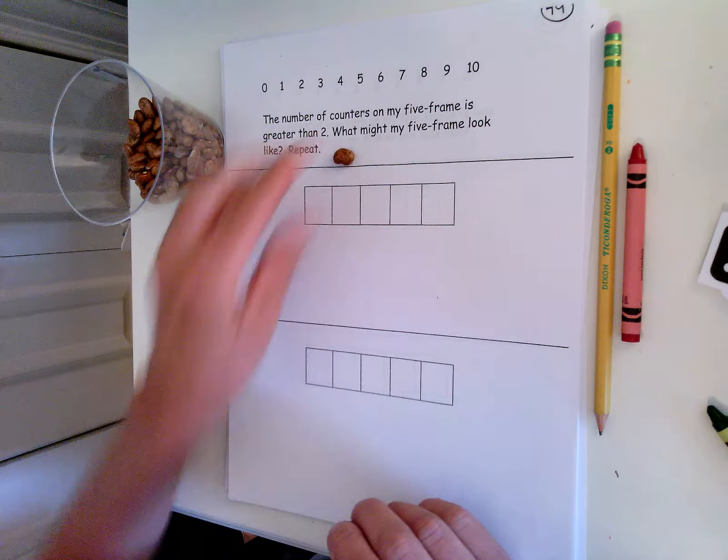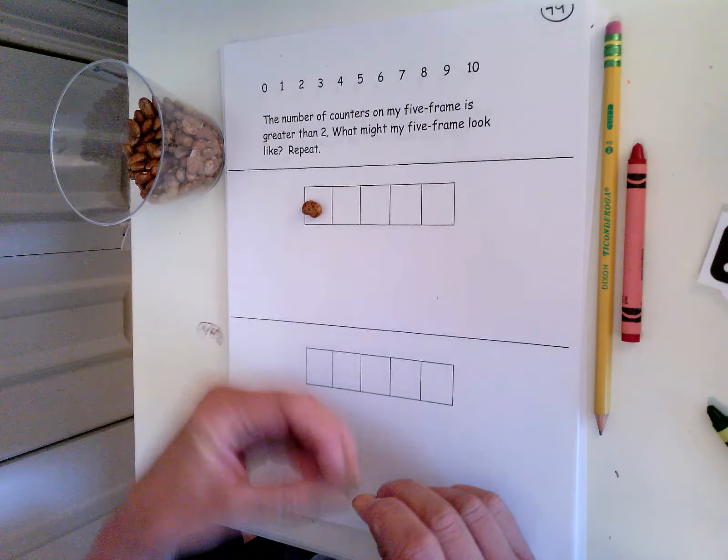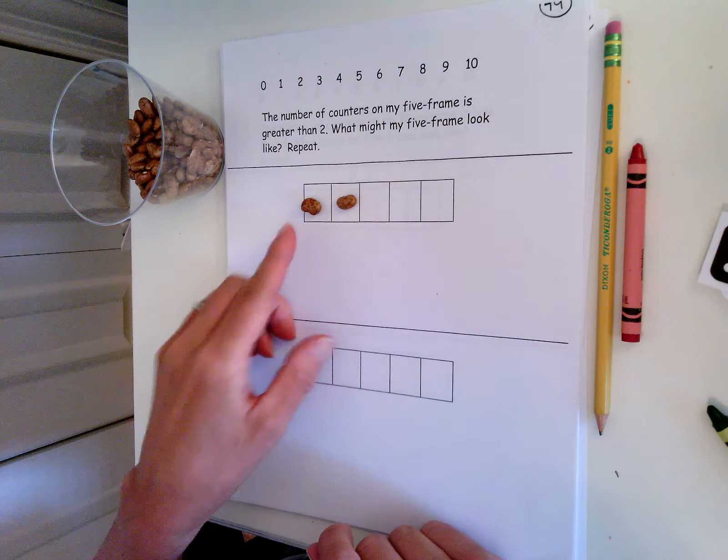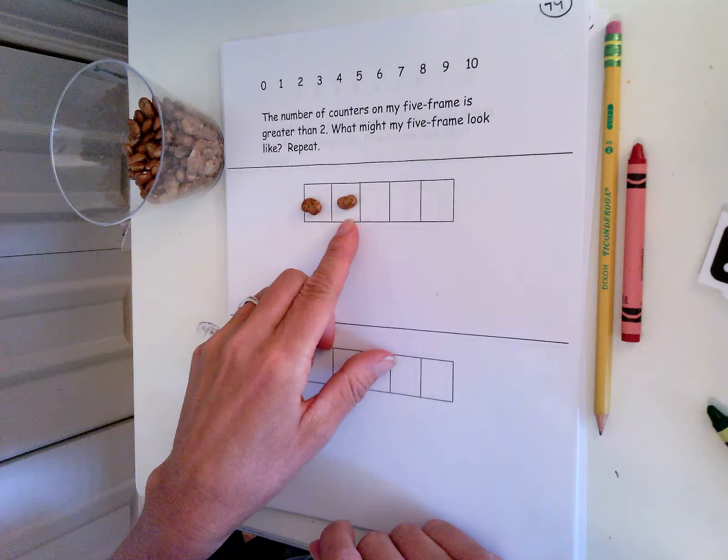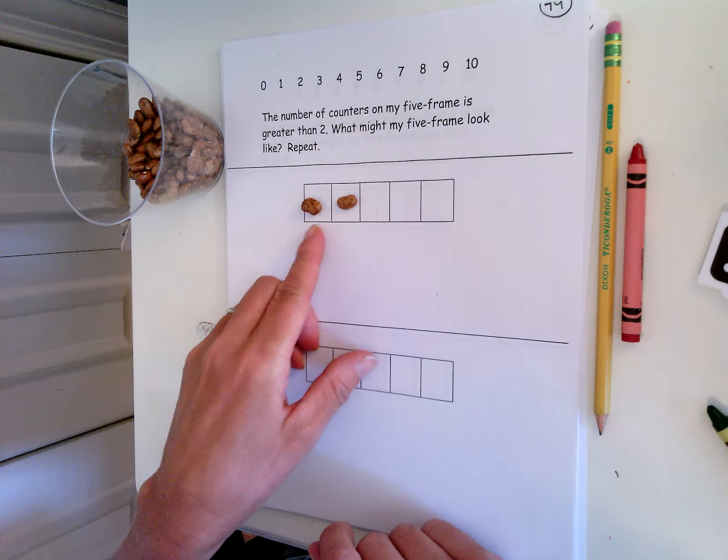It has to be greater than two. Do I have the number of counters on my five-frame greater than two here? No, it's equal to two, isn't it?